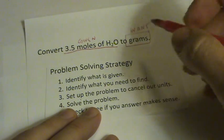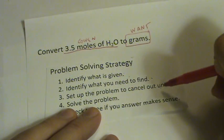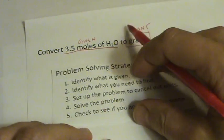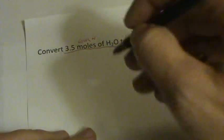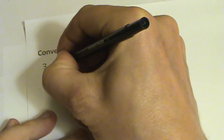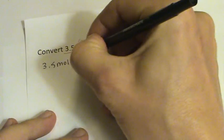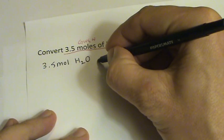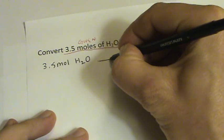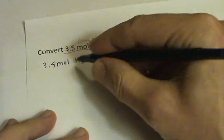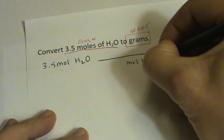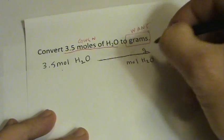So after I've identified what I'm given and what I want to find, I need to set the problem up so I can cancel those units out. So let's try that. We start out with what we're given, which is 3.5 moles of H2O. And I want to find grams. So the way I need to set this up is multiply it by a conversion factor, where I can cancel out moles of water, and I'll end up with grams on top.